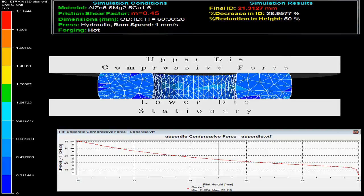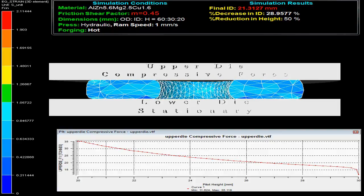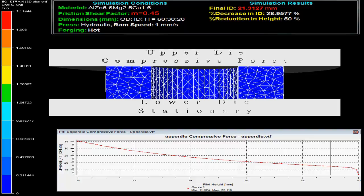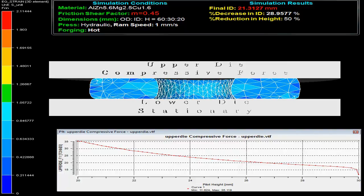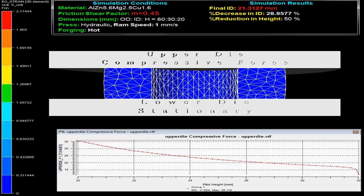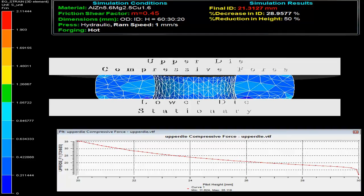Ring compression test has been widely used as a test to evaluate the friction condition in metal forming process. The video shows that a short ring specimen is plastically compressed between two flat dies with lower die stationary and upper die movable.